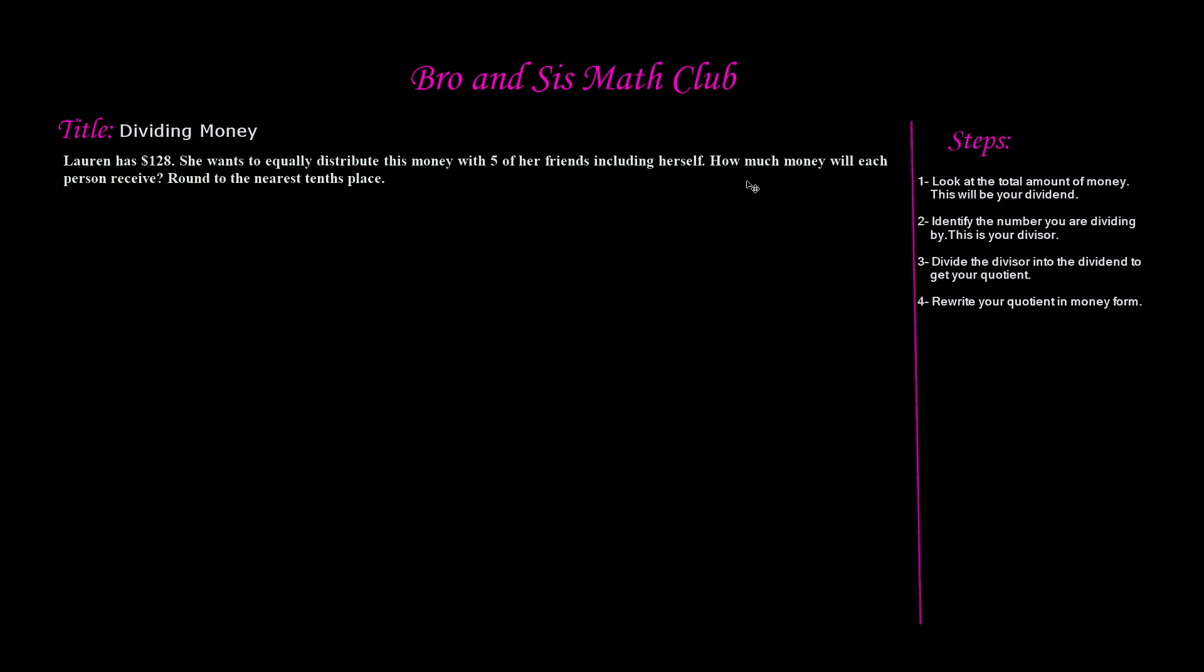As you can see, our example is Lauren has $128. She wants to equally distribute this money with five of her friends, including herself. How much money will each person receive? And it also says round to the nearest tenth's place.